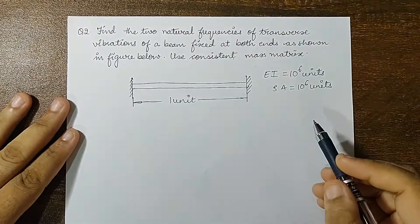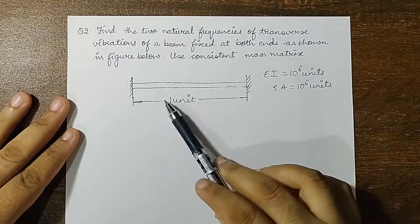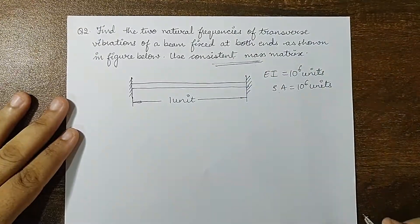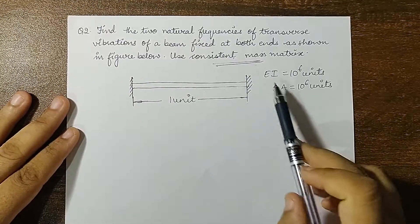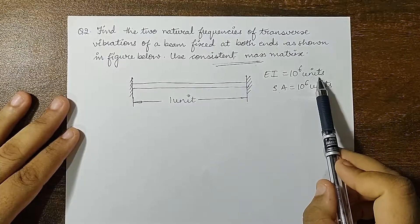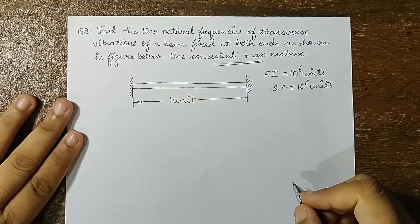Find the two natural frequencies of transverse vibrations of a beam fixed at both ends as shown in the figure below. Use consistent mass matrix. What mass matrix I am supposed to use is already mentioned in the question. E into I, which is flexural rigidity, is given as 10 raised to 6 units and rho into A is 10 raised to 6 units.